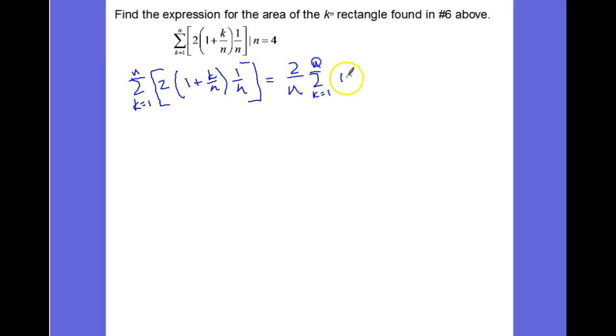When I do that I get 2/n times the sum from k equals 1 to n of (1 + k/n). Here I have the sum of two things being added together. I could rewrite that as two different sums and add those two sums together. So this will be 2/n times the sum from k equals 1 to n of 1, plus the sum from k equals 1 to n of k/n.